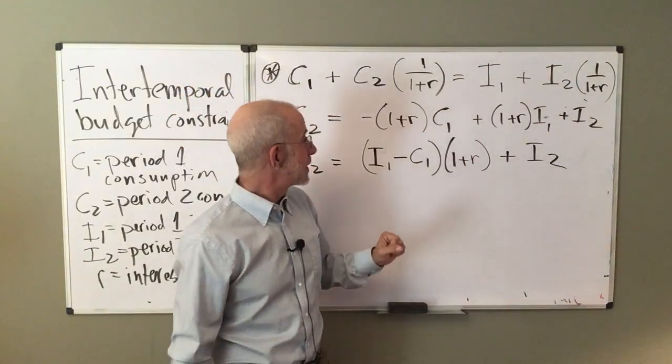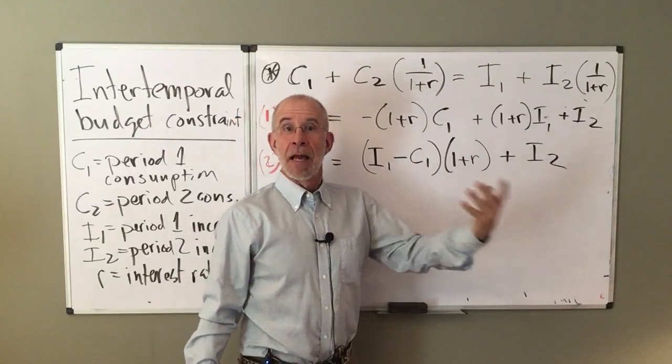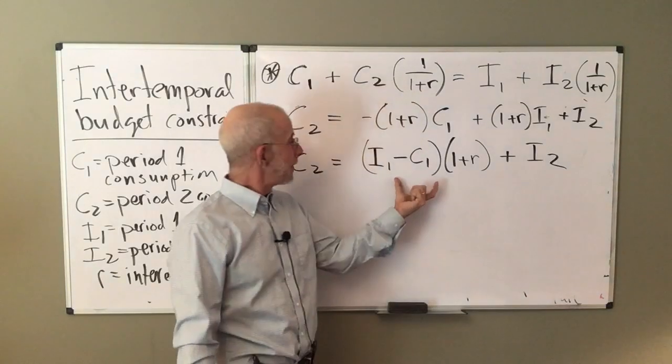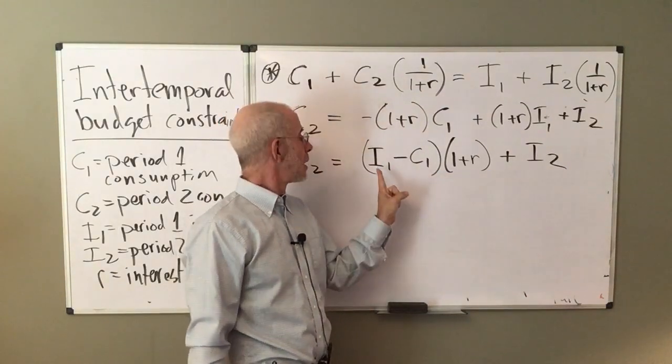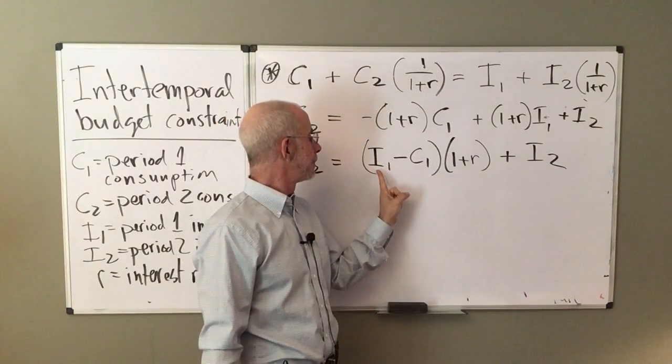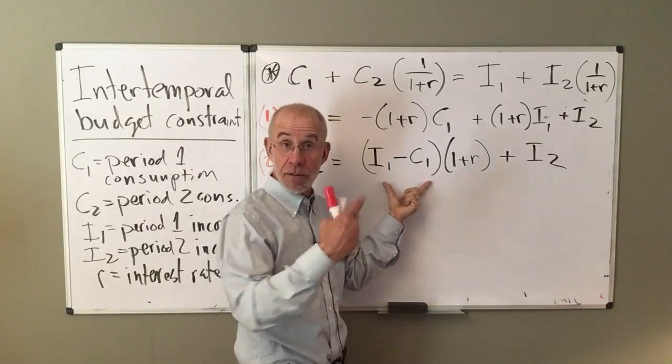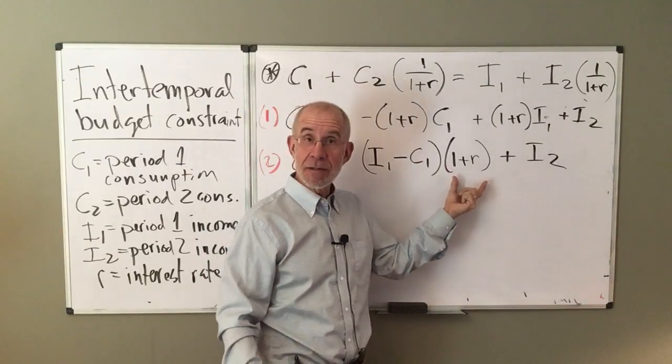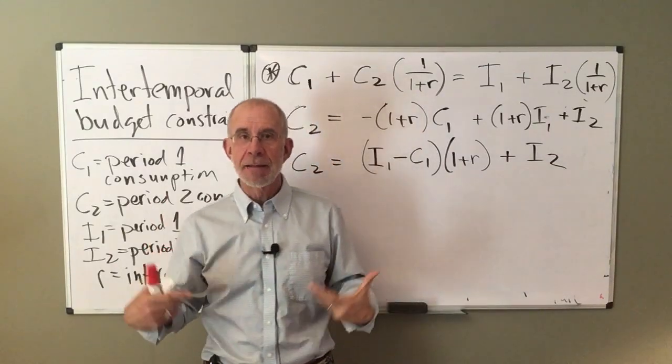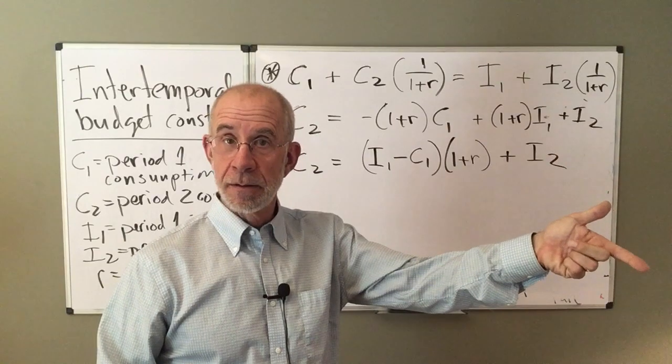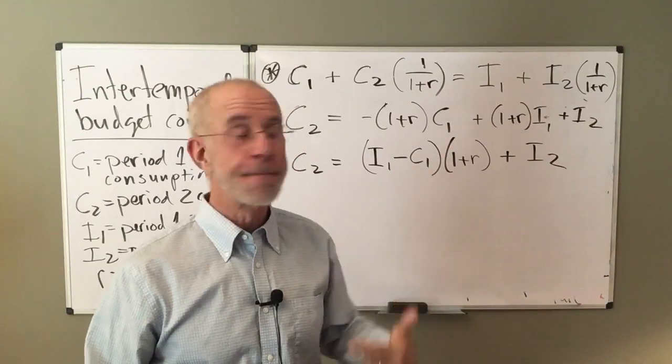Your consumption in period two depends in part on the income that you get in that period. That's fair enough. But you also have the potential to save and get income from those savings. And that's this part.